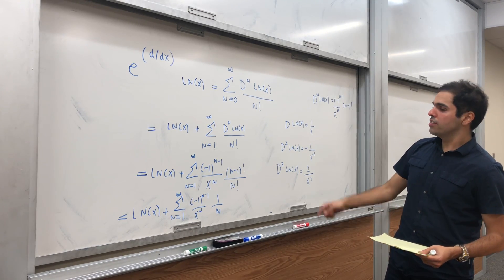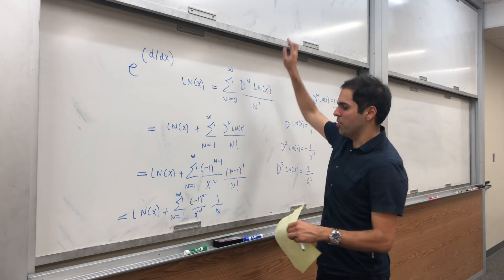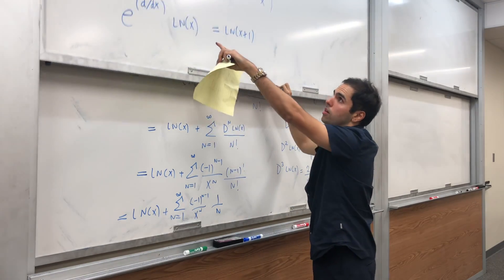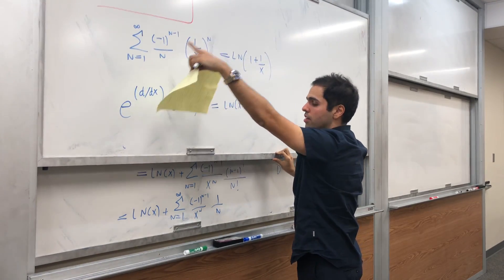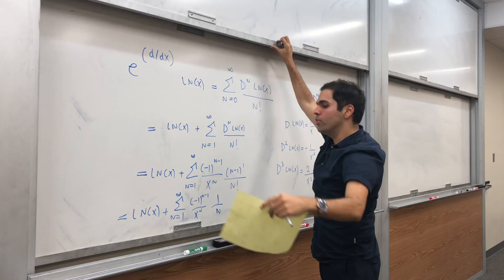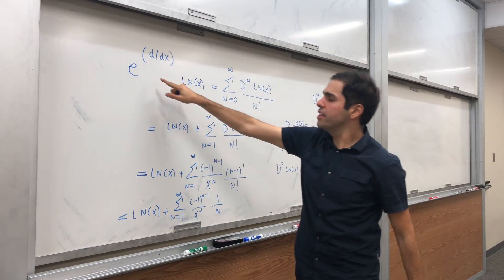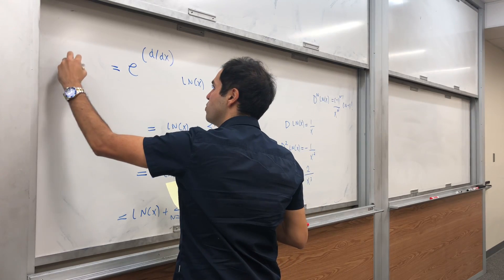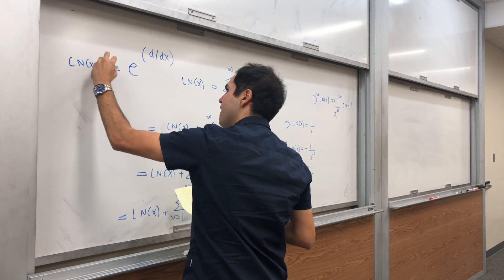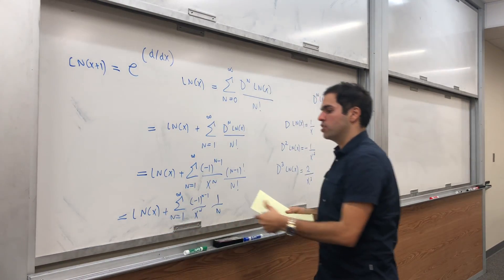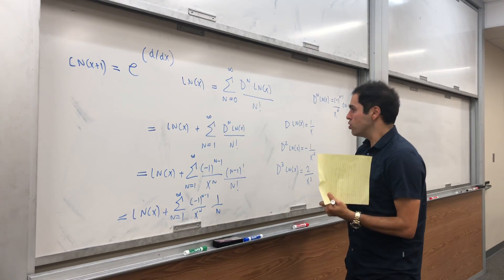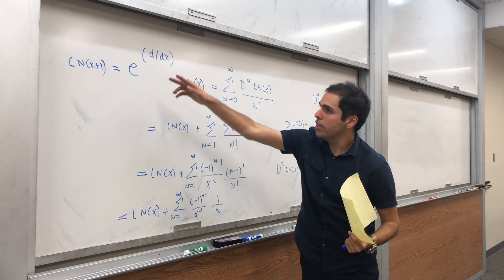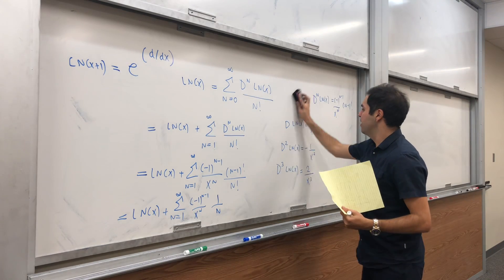And lo and behold, that's precisely the sum that we want, right? So what do we have? We have that this exponential derivative, which is ln(x + 1), equals ln(x) plus the sum that we want. So the sum that we want is ln(x + 1) minus ln(x).